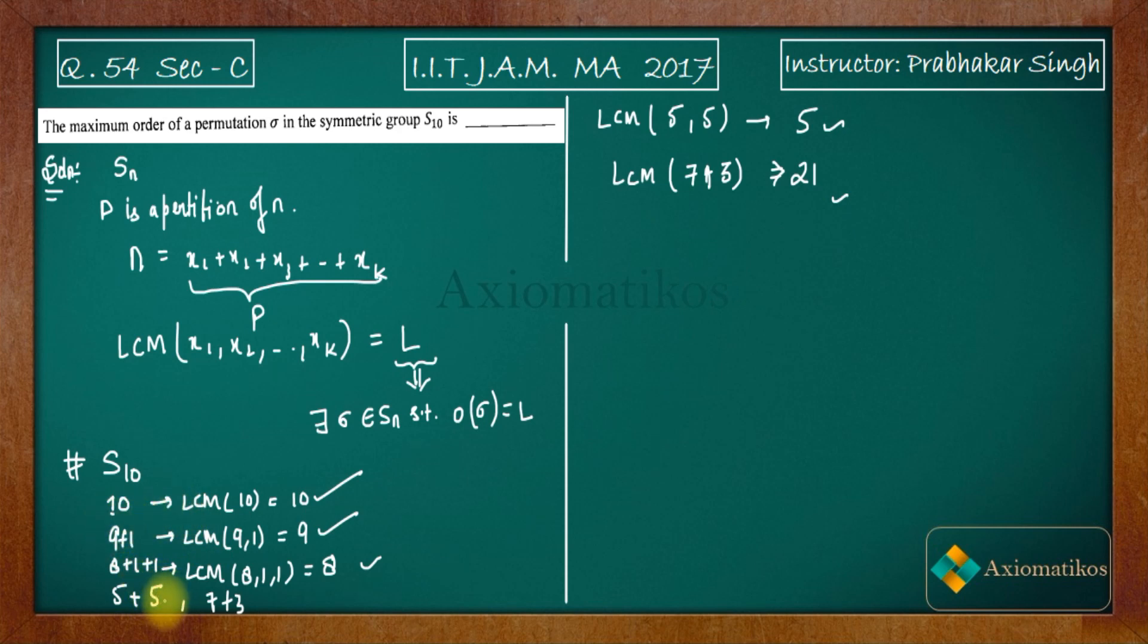So among these partitions that we have taken, the highest that I'm getting right now is 21, but we cannot say that this is the highest because we haven't written all the partitions. If you calculate all the partitions, you will get 20 partitions of 10. It is almost difficult to write all the 20 partitions of 10. So what is the trick? The trick is very simple: you try to find out a partition for which the LCM is the biggest one.